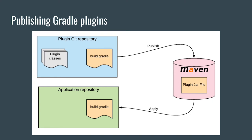So how do Gradle plugins get published? This happens in much the same way as a normal Java project — you create a jar file that gets published to a public or private Maven repository. We'll have a separate project for our plugin with plugin classes and a build.gradle configured to publish to a Maven repository — in our case, the local Maven repository. Once that jar file is published, we can head over to another project, apply the plugin, and all exposed functionality will be available.